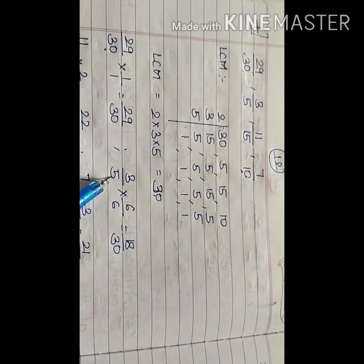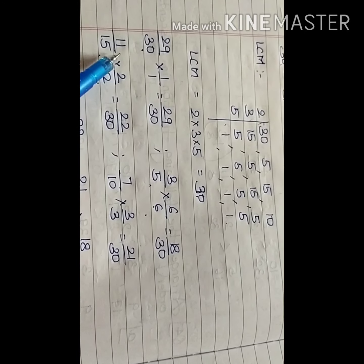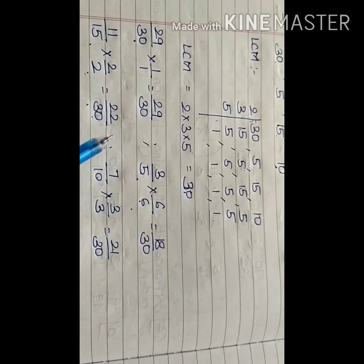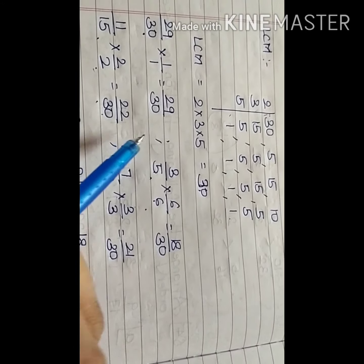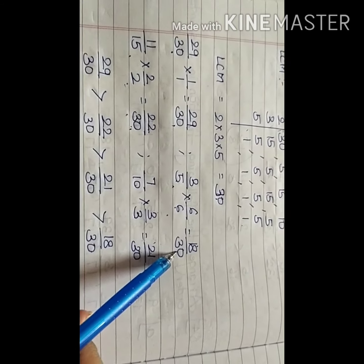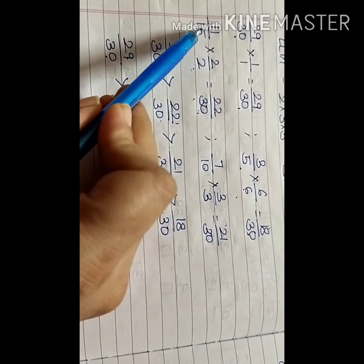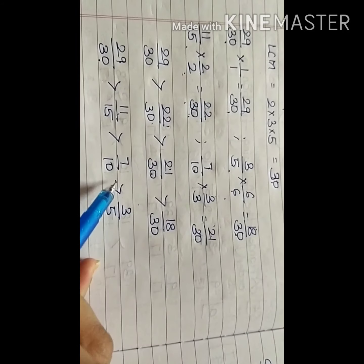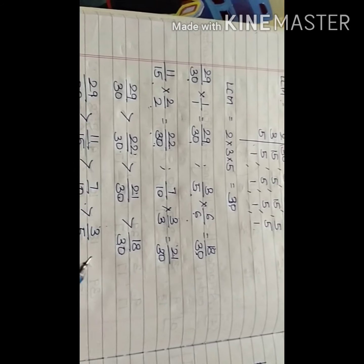For 3 upon 5, multiply by 6 to get 18 upon 30. For 11 upon 15, multiply by 2 to get 22 upon 30. For 7 upon 10, multiply by 3 to get 21 upon 30. Arranging in descending order: 29 upon 30, then 22 upon 30, then 21 upon 30, then 18 upon 30. Original fractions: 29 upon 30, then 11 upon 15, then 7 upon 10, and then 3 upon 5.